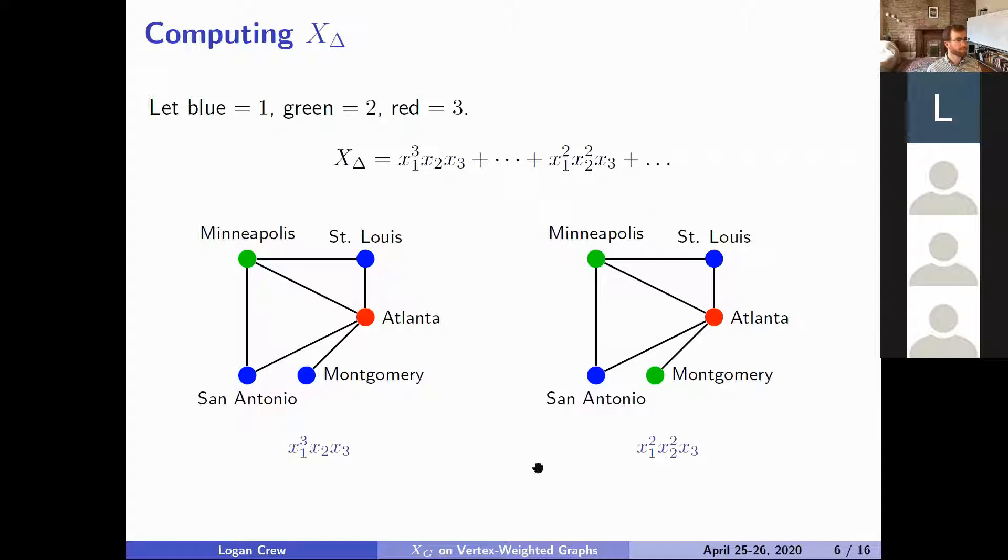So as an example of how we compute this, if we have this coloring on the left, where we have three blue vertices representing the color one and one green and one red, this particular coloring is giving us this term X1 cubed X2, X3. Whereas this one on the right has two of color one and two of color two. So this coloring gives an X1 squared X2 squared X3.